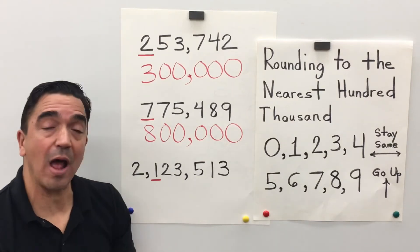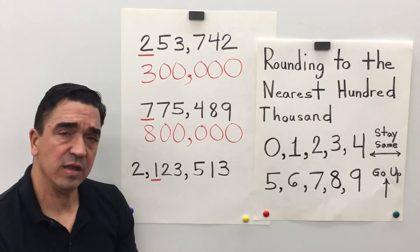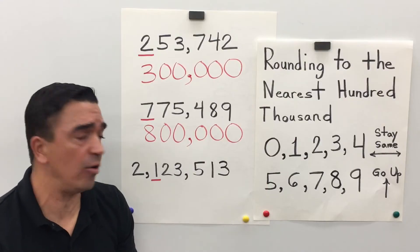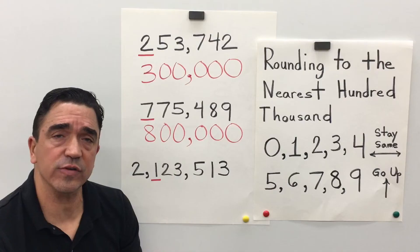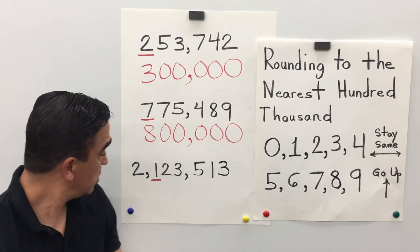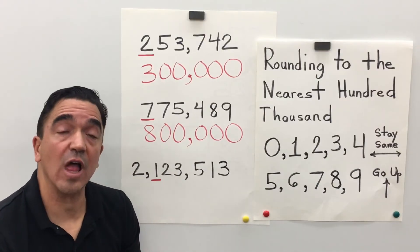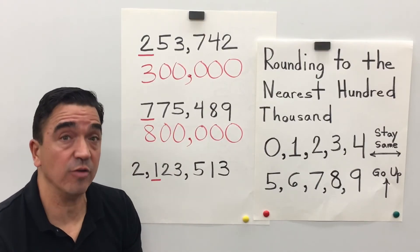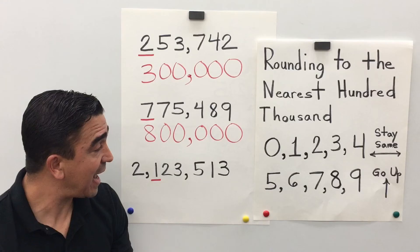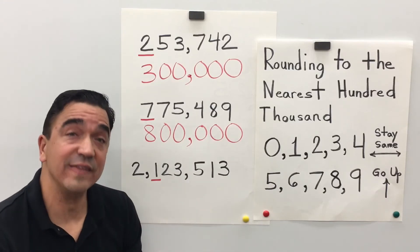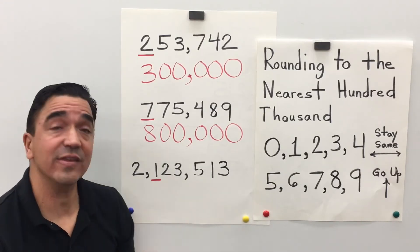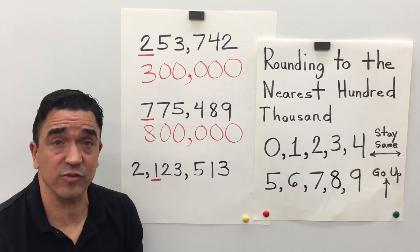Here's our last problem: 2,123,513. Well, once again, I've underlined the 1 in the hundred thousandths place. And the 2 in the ten thousandths place is going to tell the 1 in the hundred thousandths place what to do.